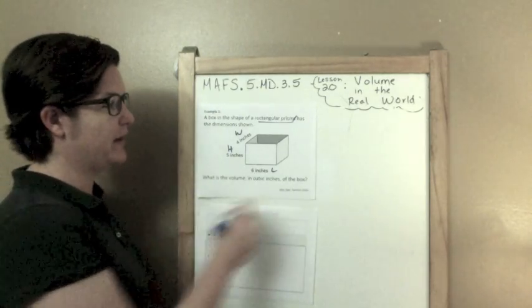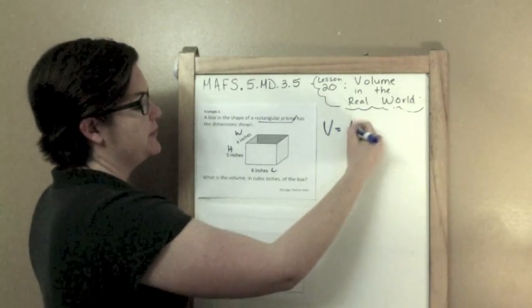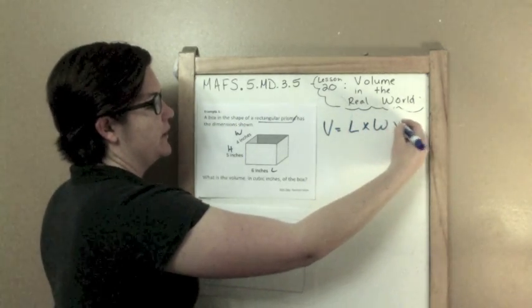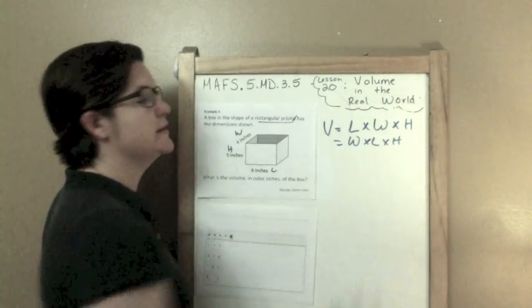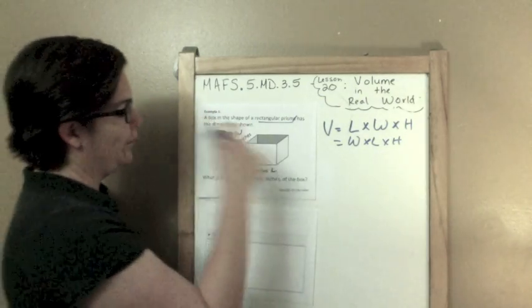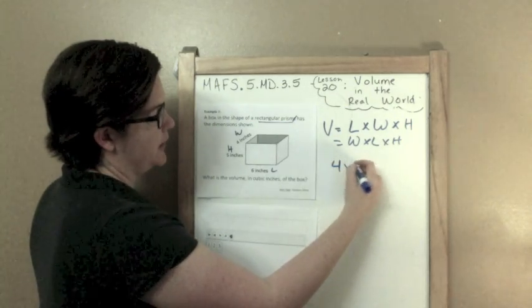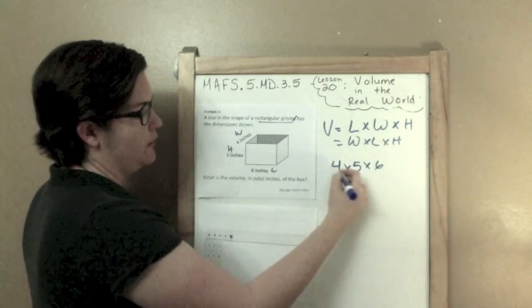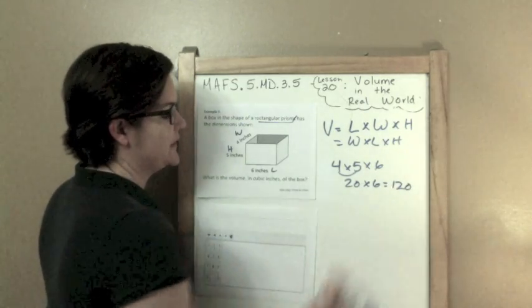So, how do we find volume? Well, the volume, I think this is also on your reference sheet. The volume is the length times the width times the height. Or it could be the width times the length times the height. It does not matter the order that you put the numbers in. So, 4 times 5 times 6. 4 times 5 is 20 times 6 equals 120.